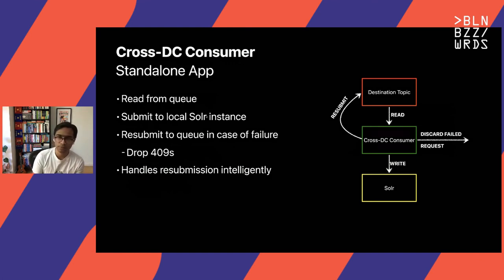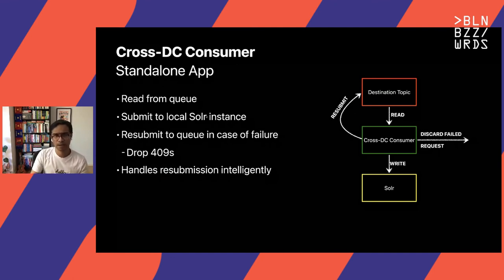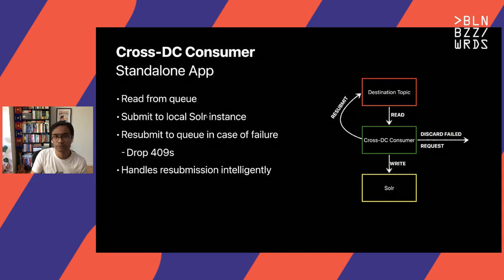The cross-DC consumer in this framework is a standalone app with the simple responsibility of reading from the queue and writing to Solr, but also an intelligent ability to figure out what kind of requests to discard and which ones to resubmit. After a lot of trials and errors, we've learned that the only kind of requests safe to drop are 409s, which are version conflicts. In case of optimistic concurrency, when a 409 comes back it translates to Solr already having a more recent version of this document, so it's safe to discard. In all other cases, it's safe to retain these documents.